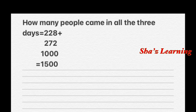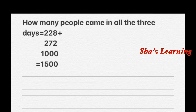How many visitors in all days? How many people came in all three days? First day: 228. Second day: 272. Third day: 1000. 8 plus 2 is 10, write 0 carry 1. 1 plus 2 plus 7 is 10, carry 1. 1 plus 2 plus 2 is 5, plus 0 is 5. Then 1 in the 1000s place. Total visitors is 1500.